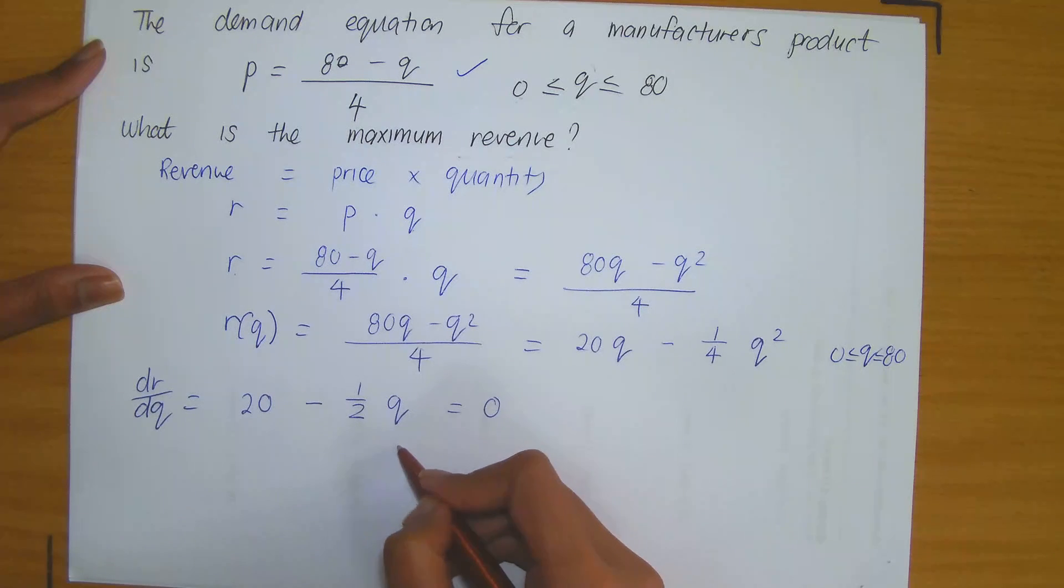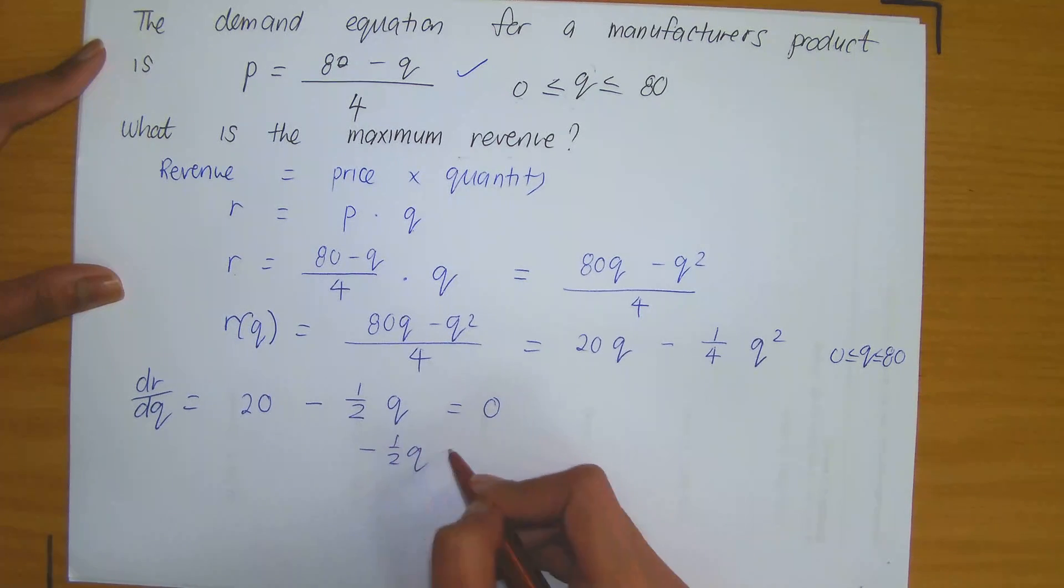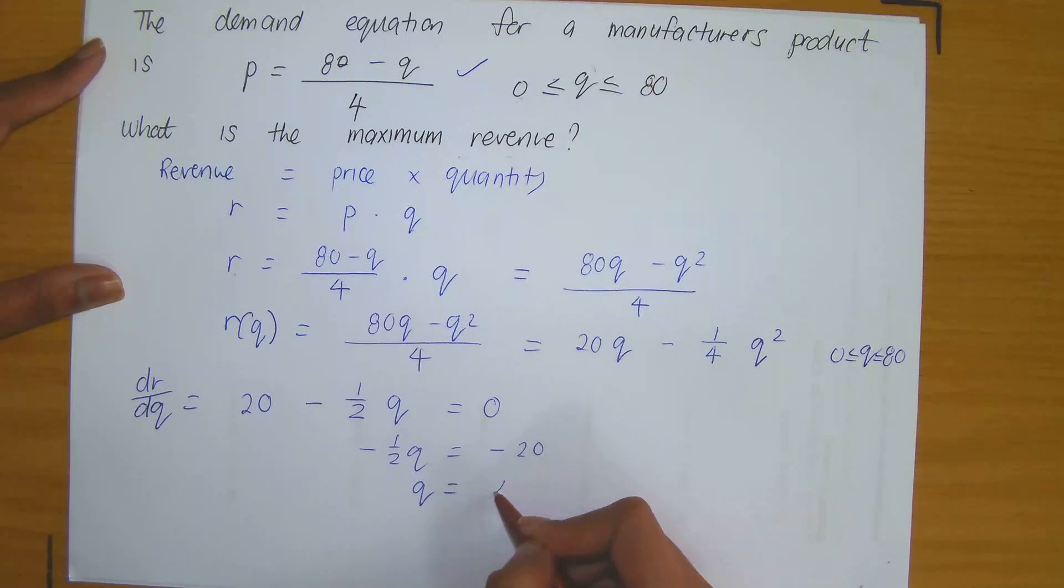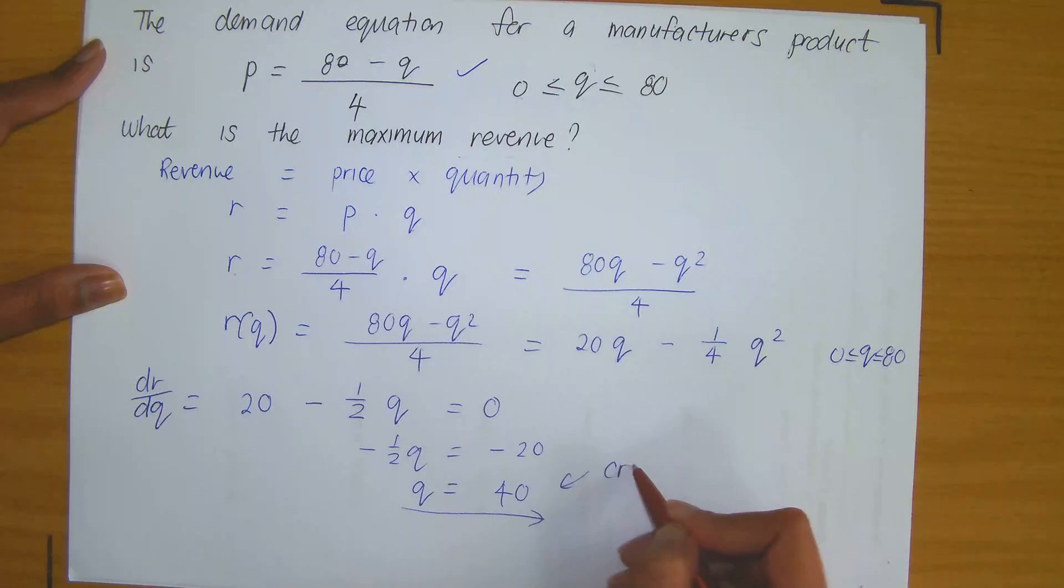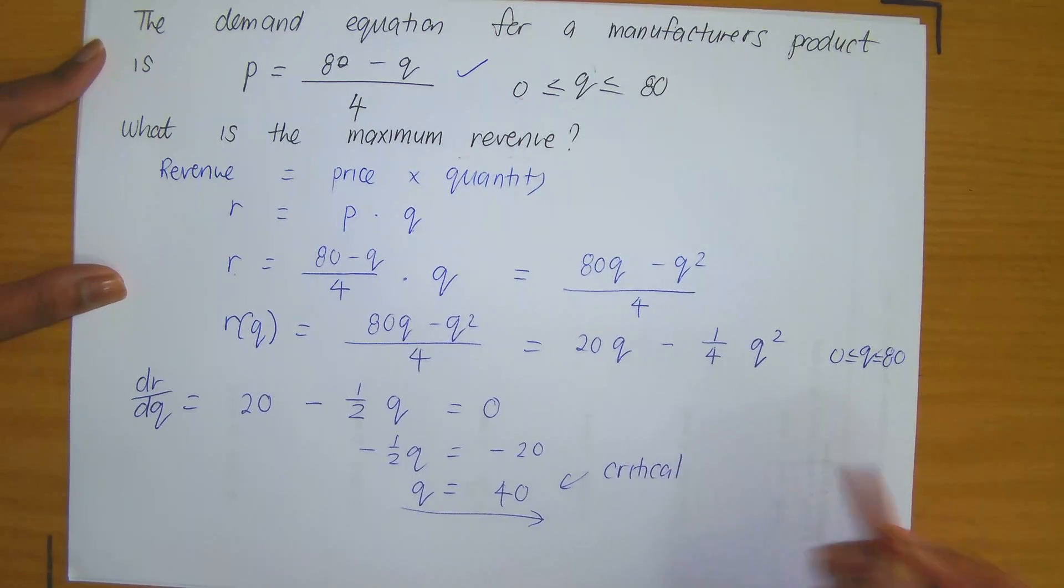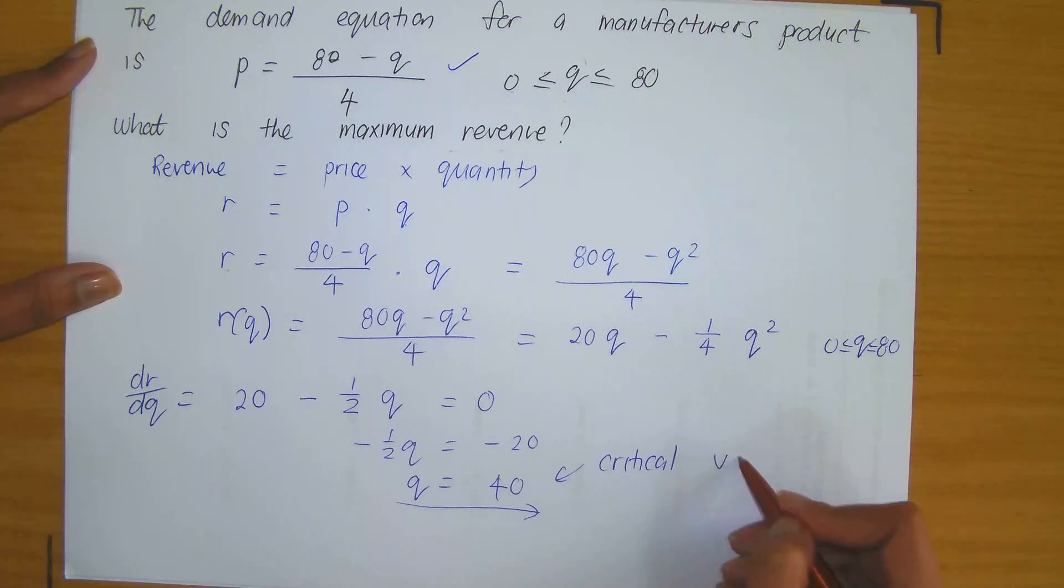And remember, we're now going to equate this to 0 and solve for Q to determine the critical values. So this now tells me that minus a half Q equals to minus 20, and therefore Q equals to positive 40. So this is the critical value that I've found.